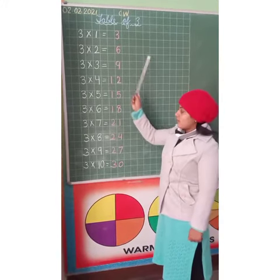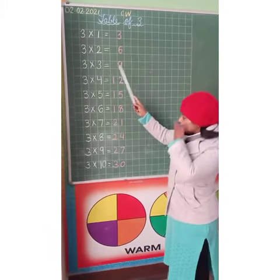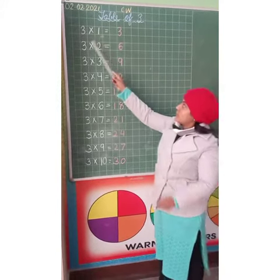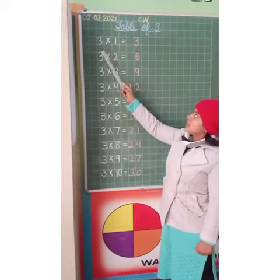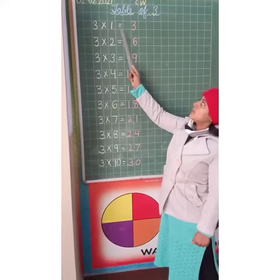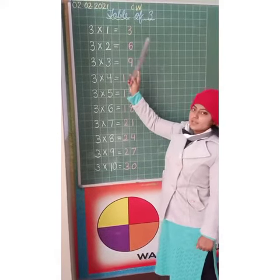So how you have to write it? 3, 1's are 3. 3 multiplied by 1 equals 3.